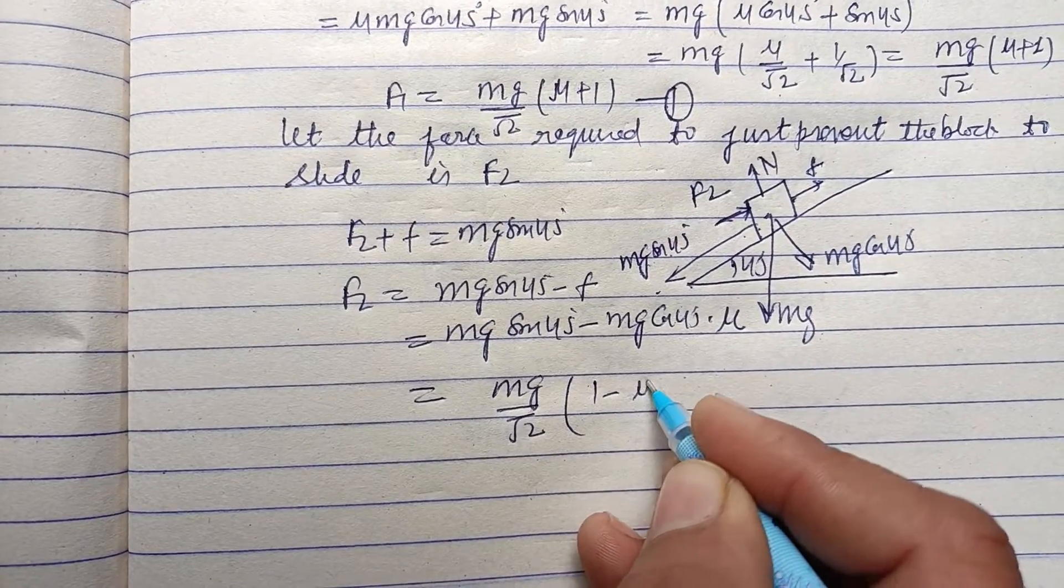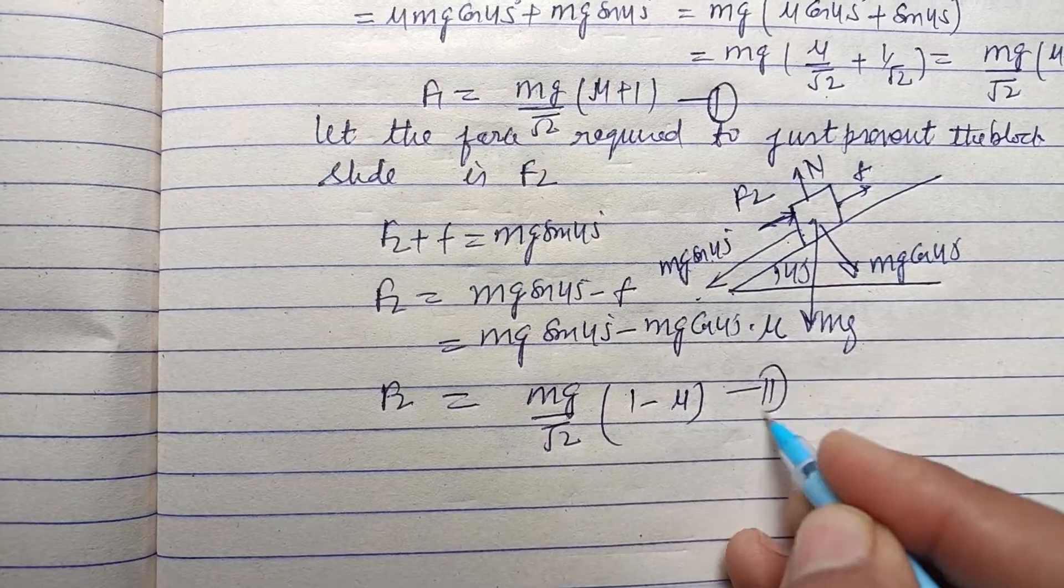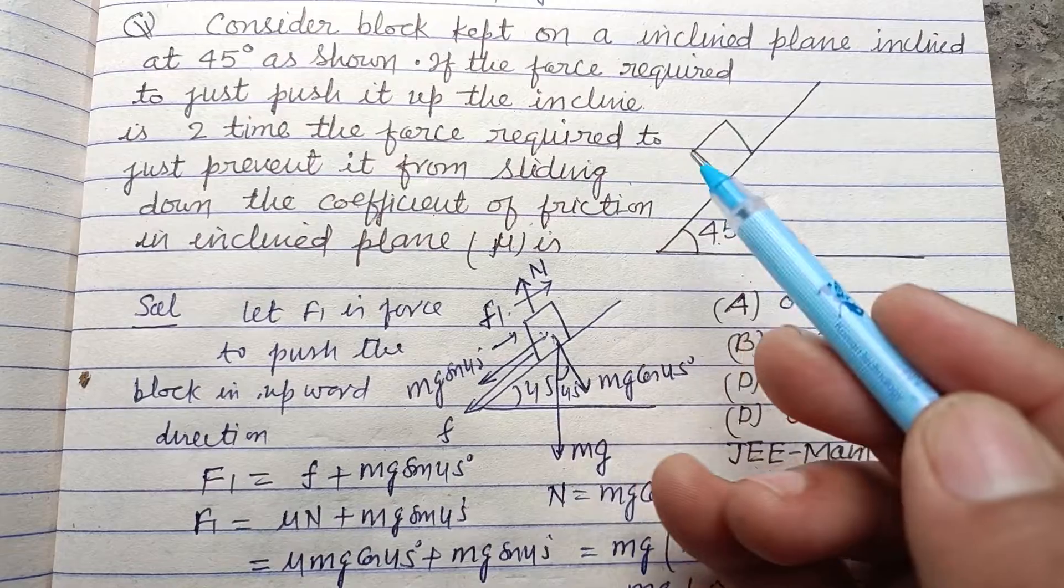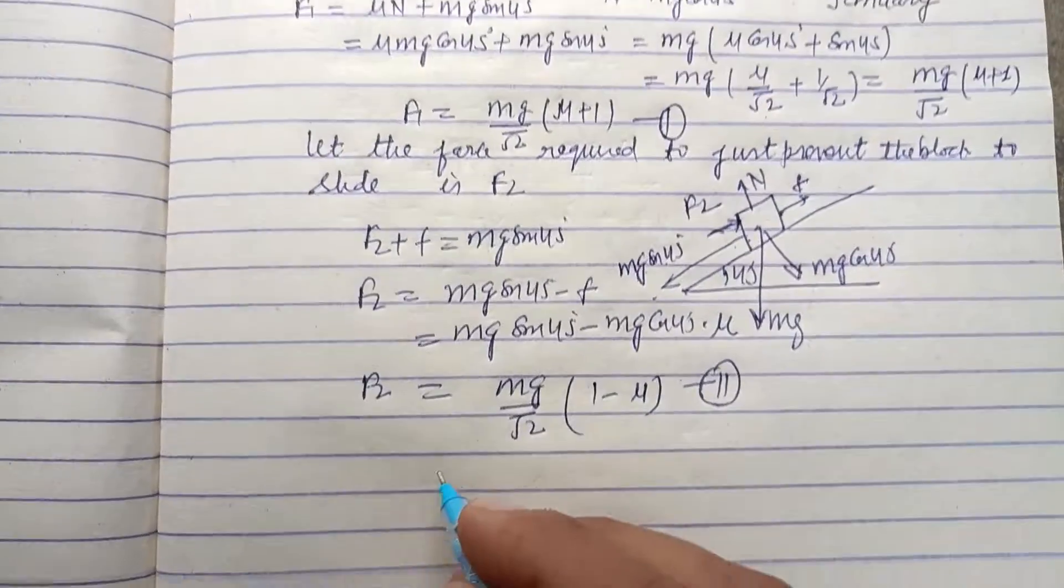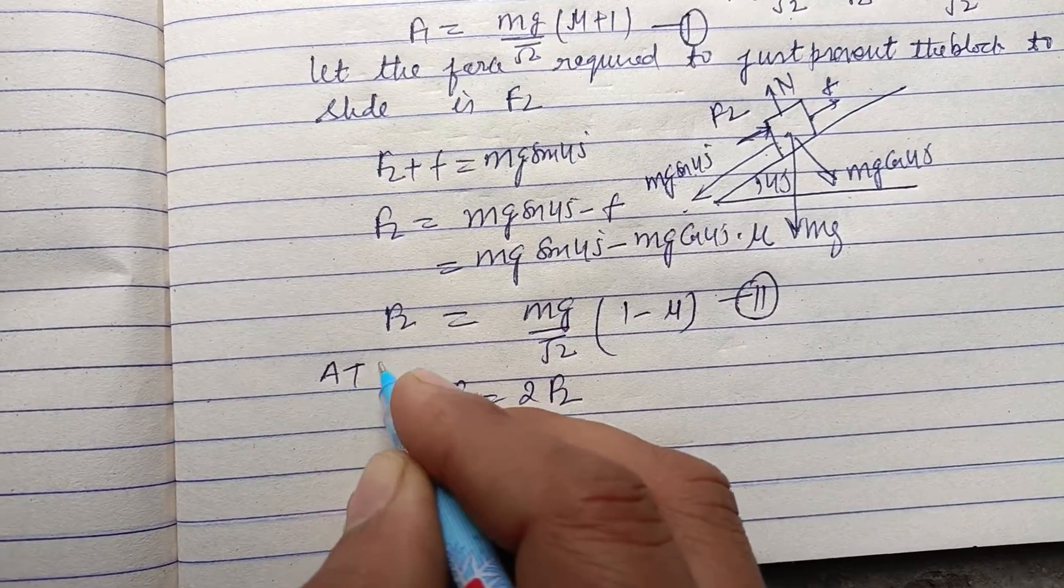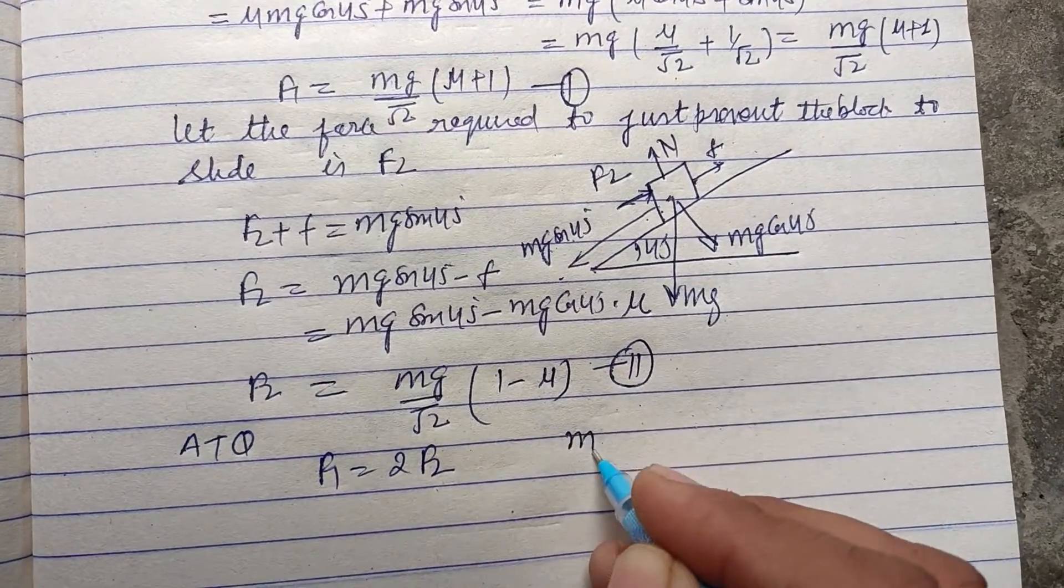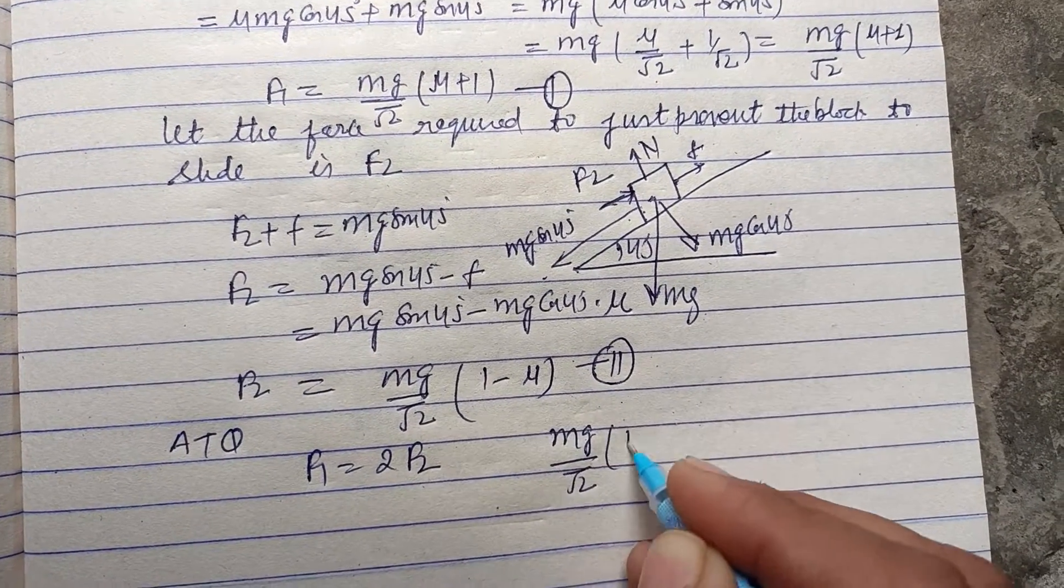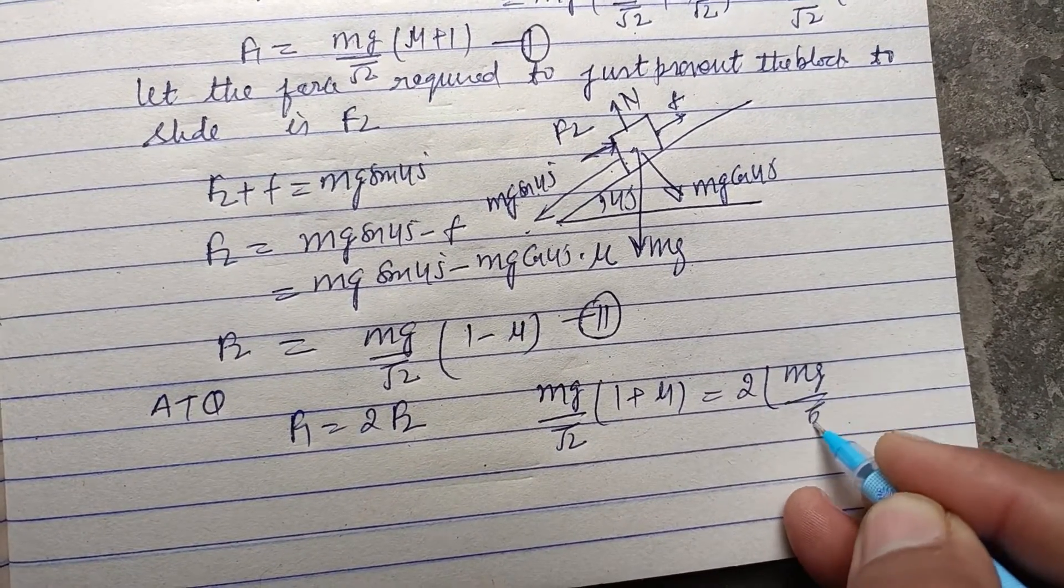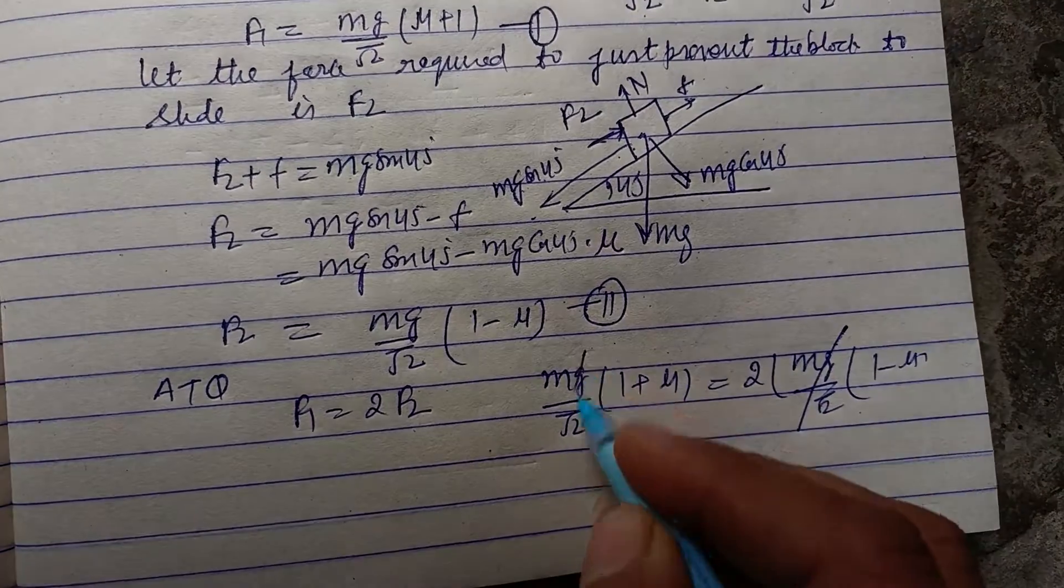Question is saying that two times the force required to just prevent it, so F1 equals 2 times F2 according to question. Now putting the value, F1 is Mg over root 2 times 1 plus mu, and 2 times Mg over root 2 times 1 minus mu.